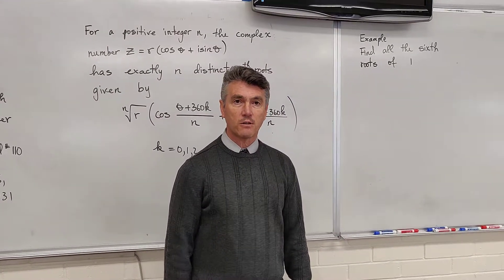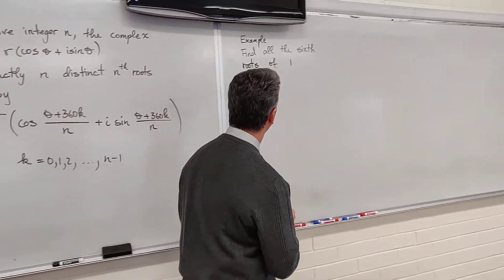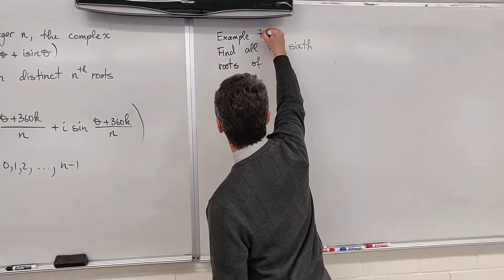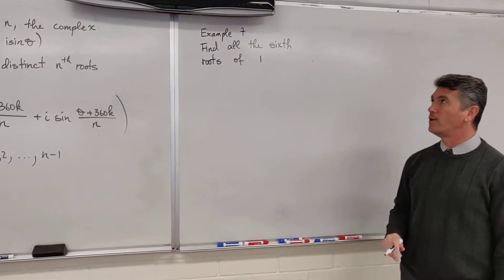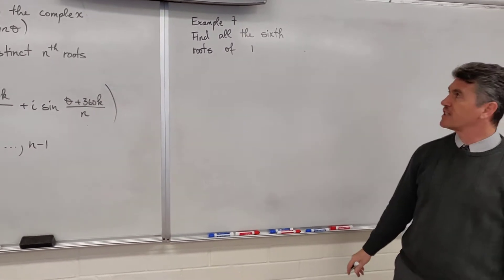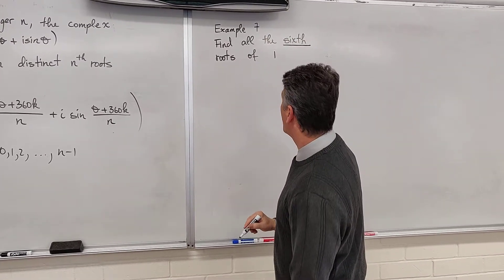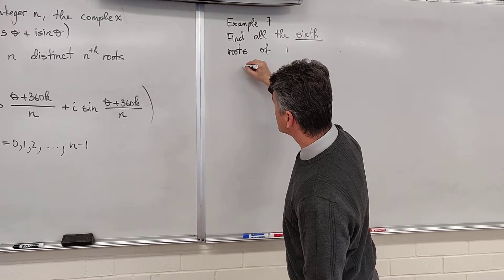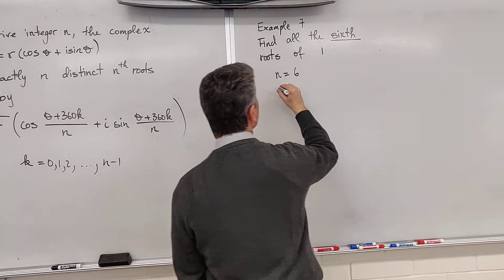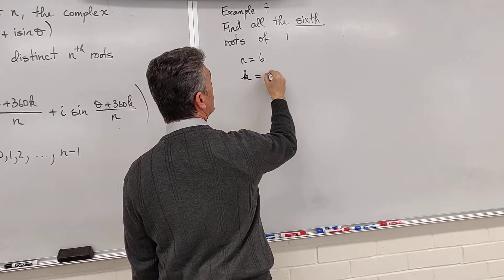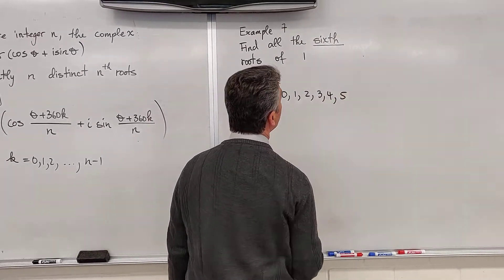We will now look at examples — four examples where we learn how to use this formula. First example, this is Example 7. We are asked to find all six roots of 1. The first big clue is that I'm looking for the six roots of 1, which means n is equal to 6. In addition, k will be equal to the numbers 0, 1, 2, 3, 4, and 5.